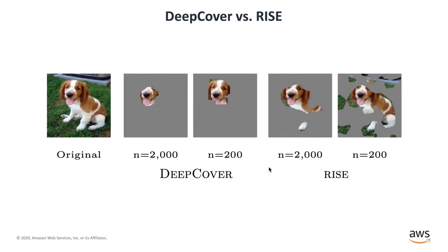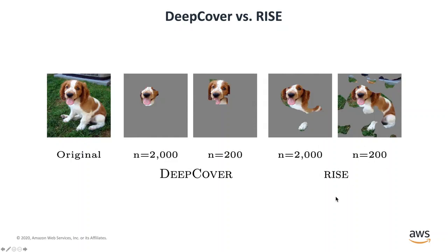To give an idea of the difference between tools: for 2,000 samples, Deep Cover gives a fairly decent explanation. For only 200 samples — very small compute — it still gives a pretty decent explanation. On the other hand, if you let RISE use only 200 samples, it starts using pieces of grass as part of the explanation, which is really not correct.